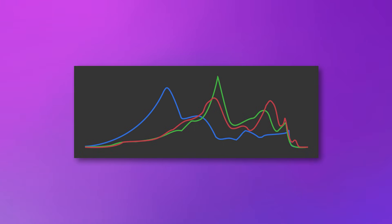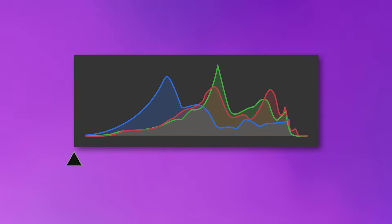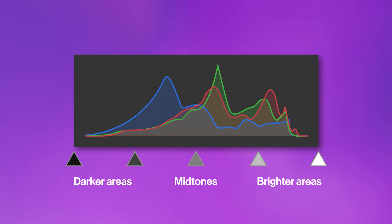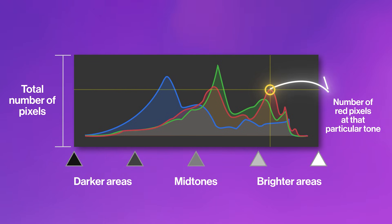So what are these three histograms — red, green, and blue? Each graph shows the brightness values for its specific color channel. The horizontal x-axis represents tones from pure black on the far left, through darker shades, mid-tones, brighter shades, and finally full intensity of that color on the far right. The vertical y-axis shows how many pixels have that specific brightness for that color. A tall peak in the red channel, for instance, means many pixels have that intensity of red.